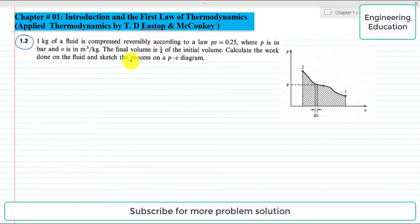The statement of the problem is: 1 kilogram of a fluid is compressed reversibly according to law PV equals 0.25, where P is in bar and V is the specific volume in cubic meter per kilogram.